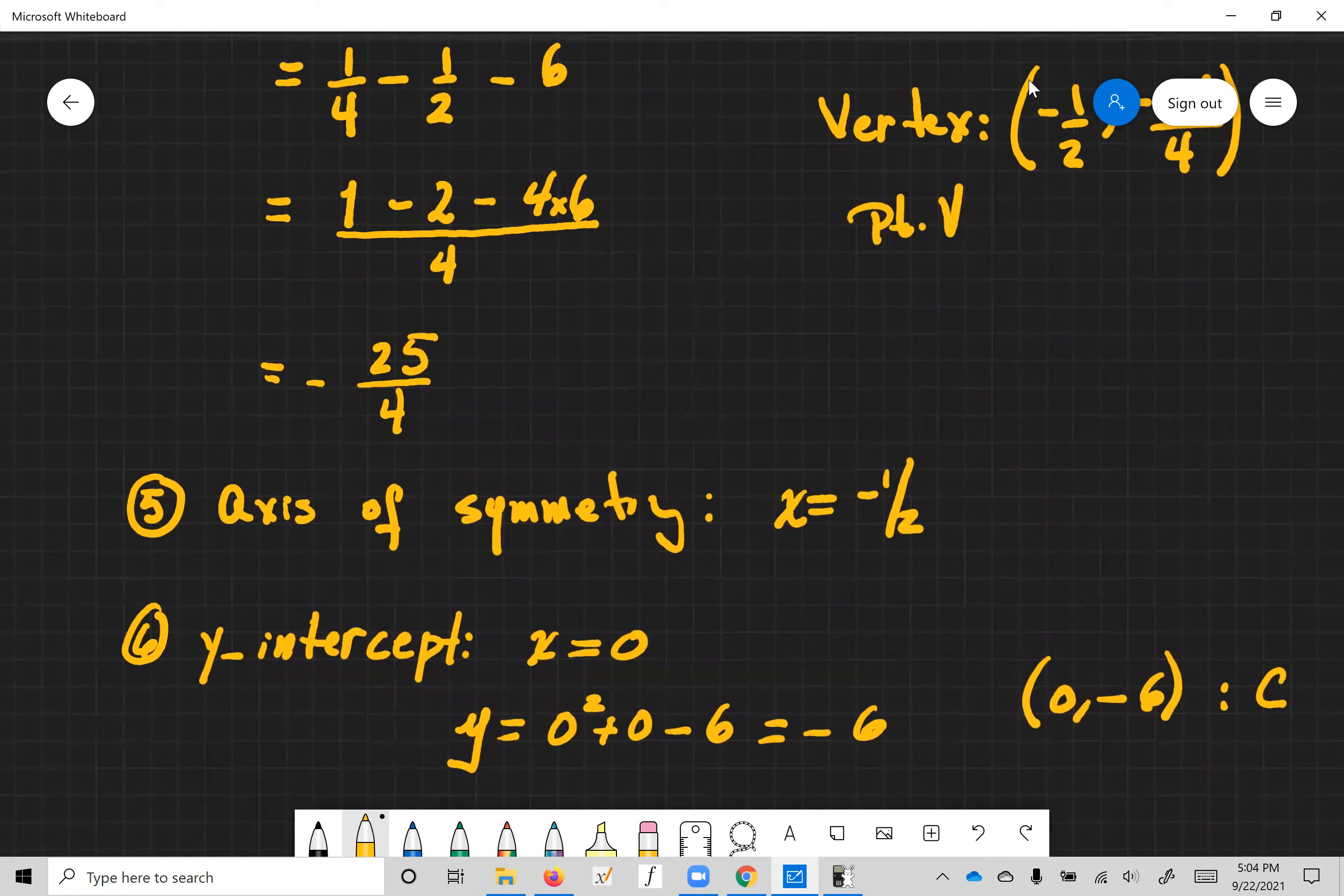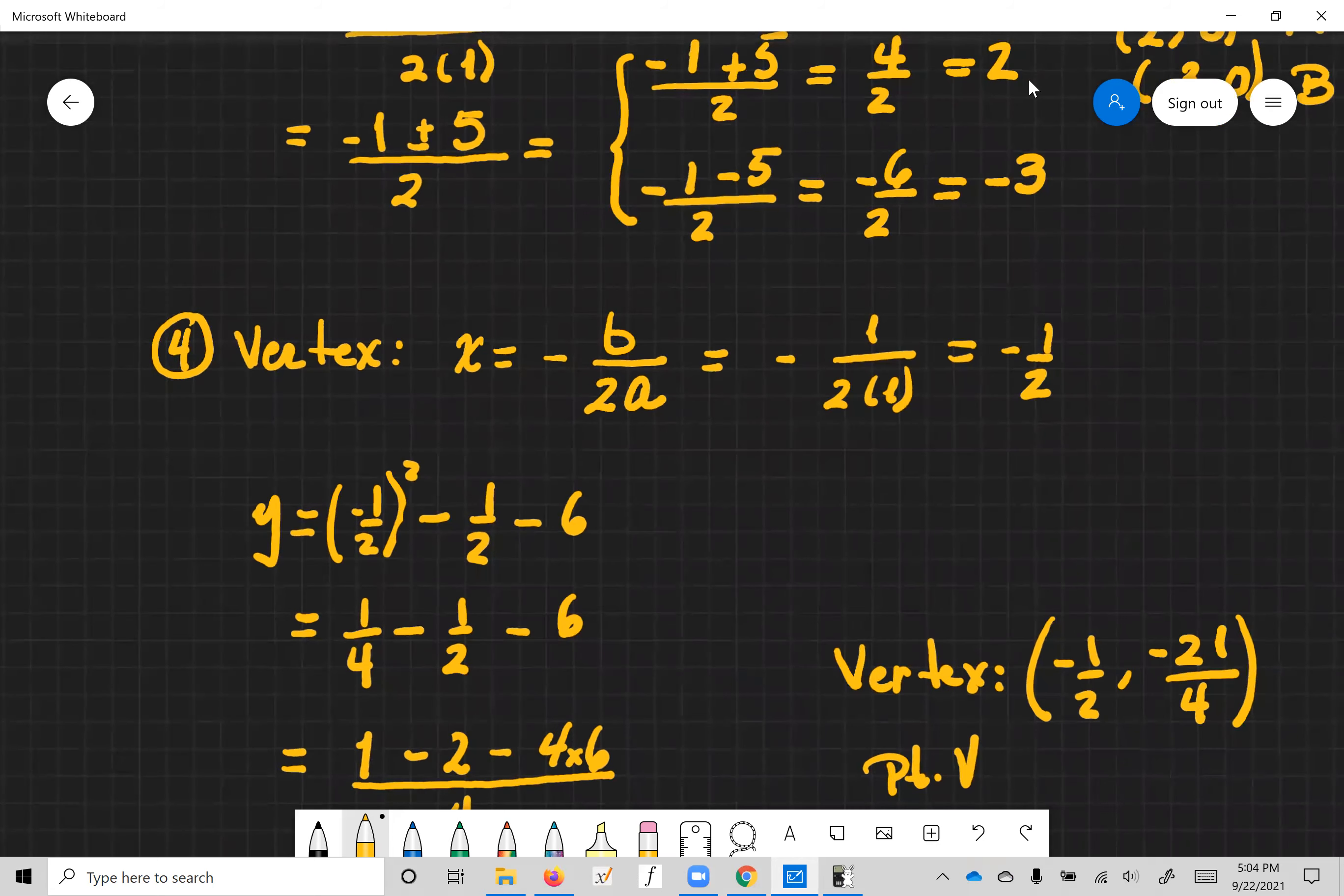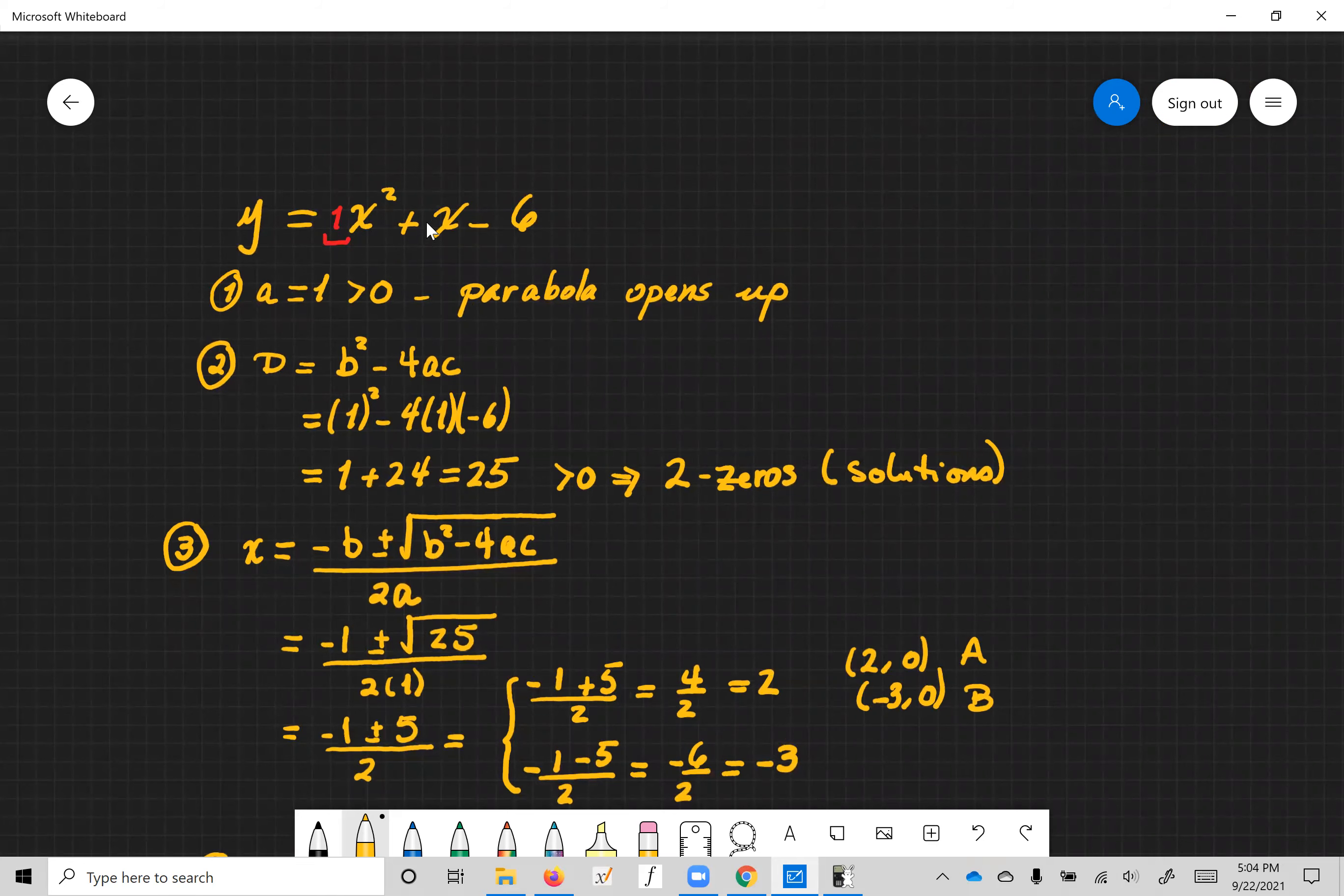Let's look at the y-intercept. Y-intercept, that's when we set x to be zero. So if you go back to the original equation, when x is zero, this goes away, this goes away, we're left with negative six.